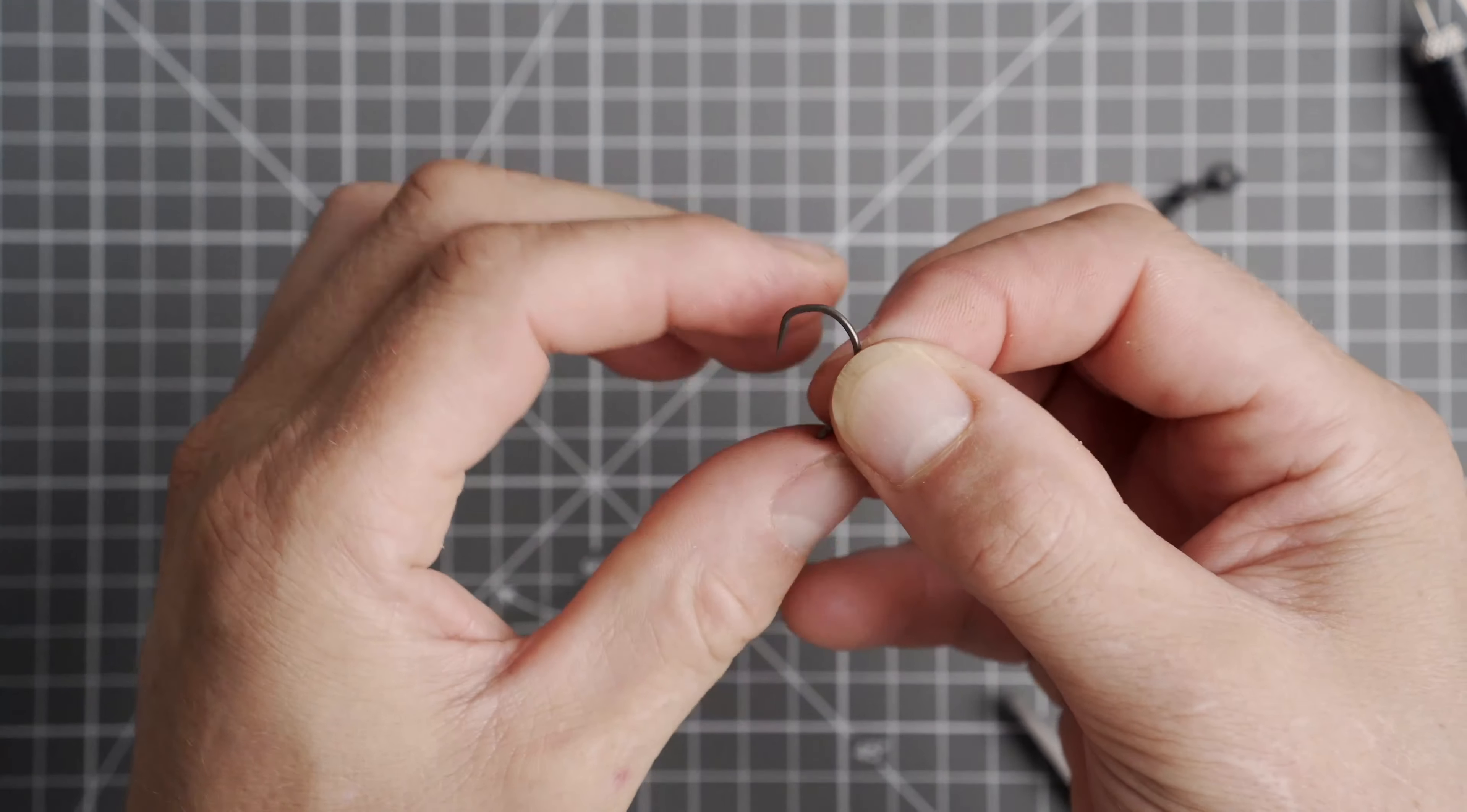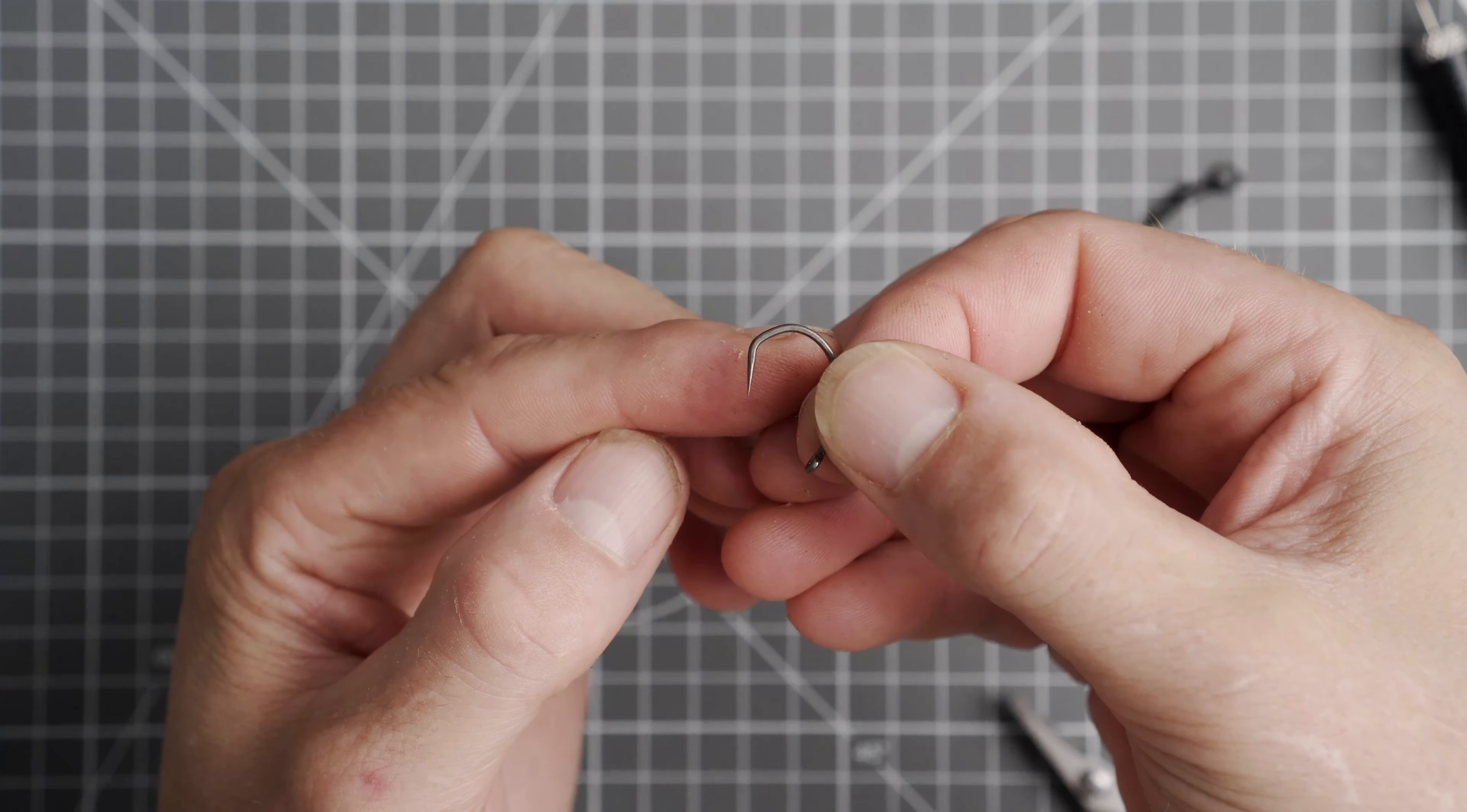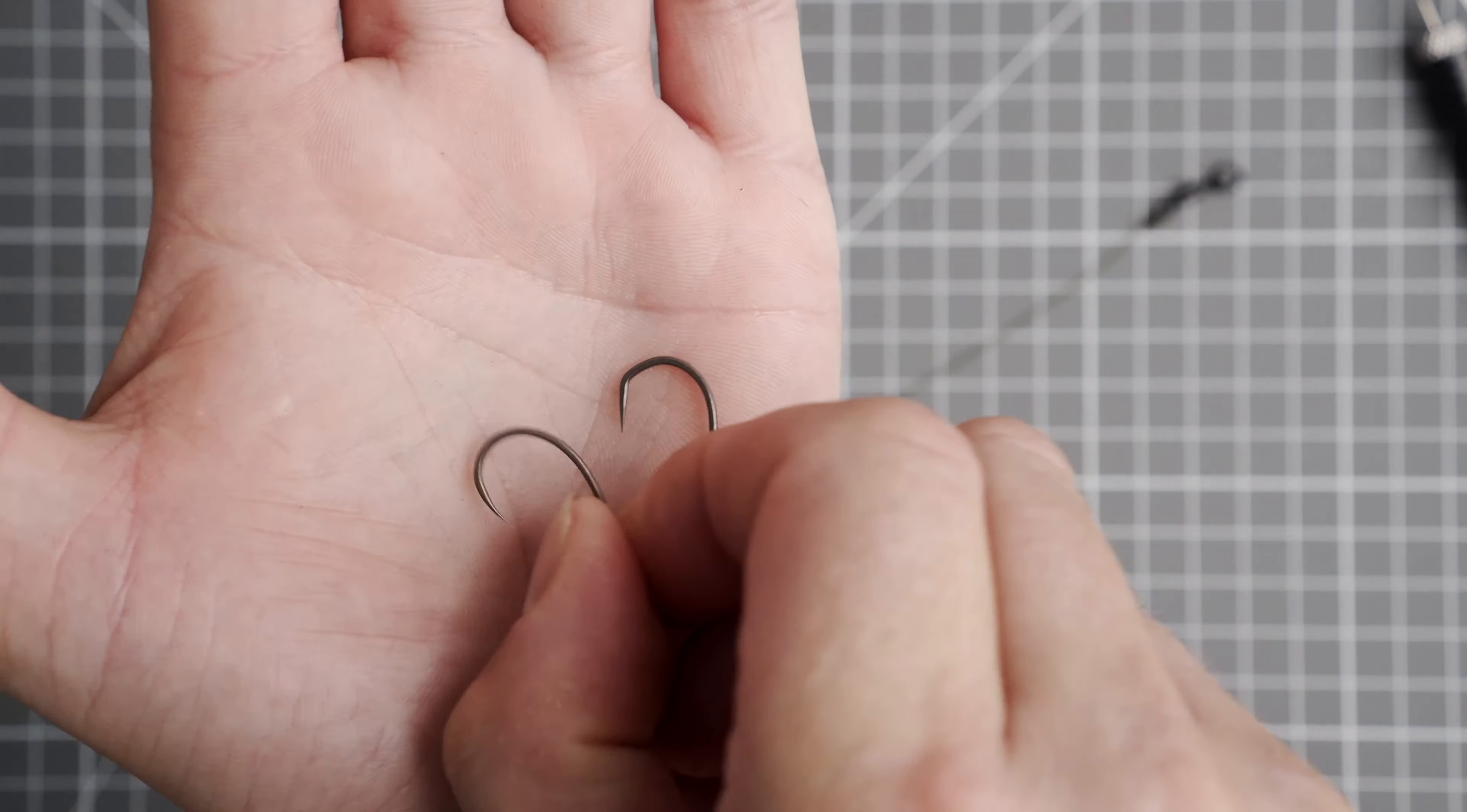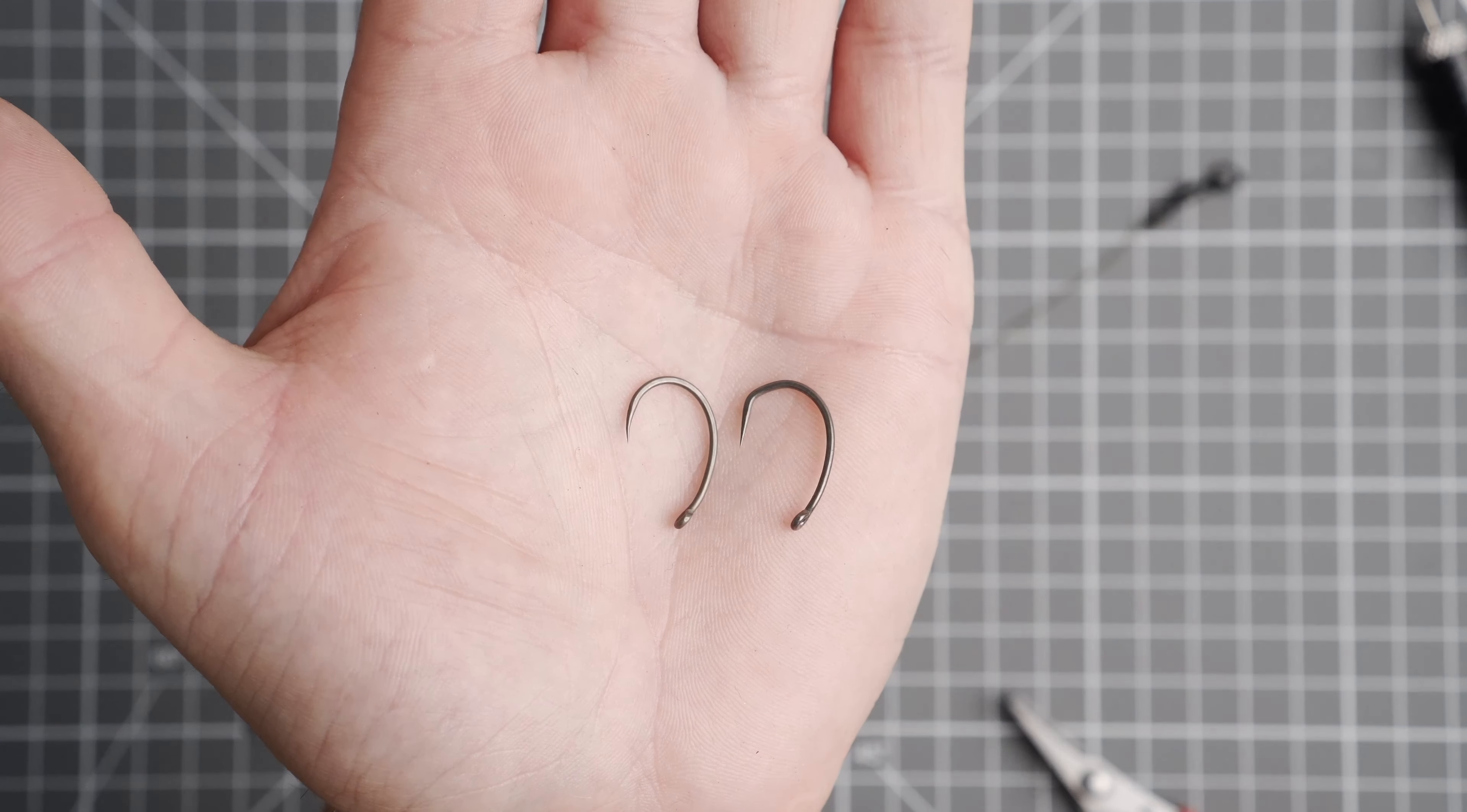With the SP hook we've got exactly the same hook pattern but it's actually got a straight point for those people who like a straight point hook. And putting the two together you can actually now see the difference. The BP on the left and the SP is on the right.